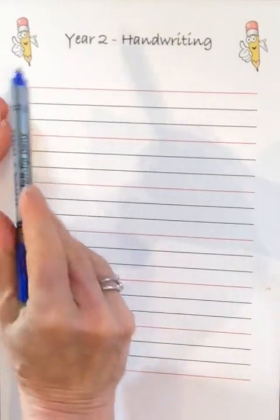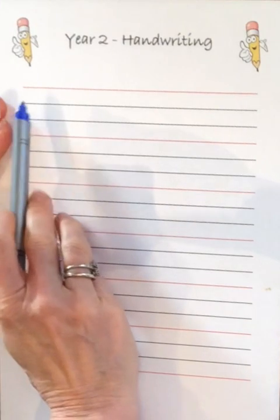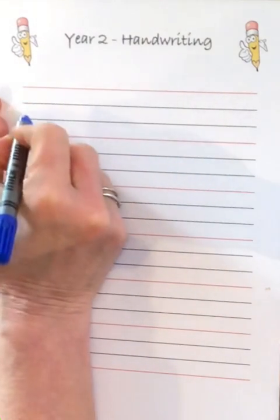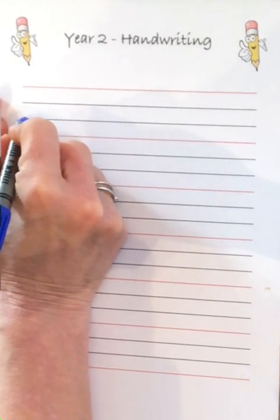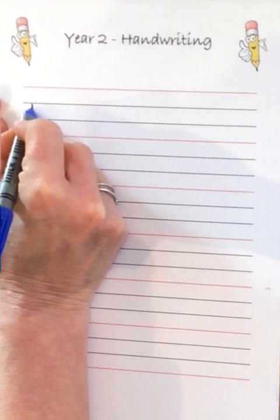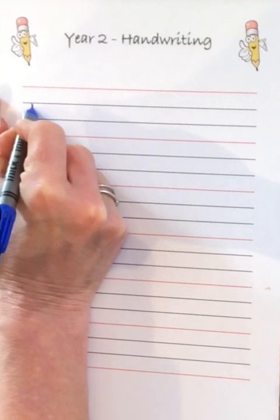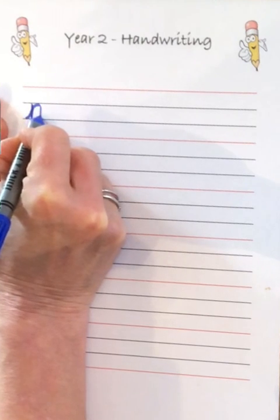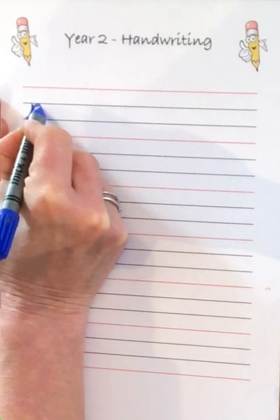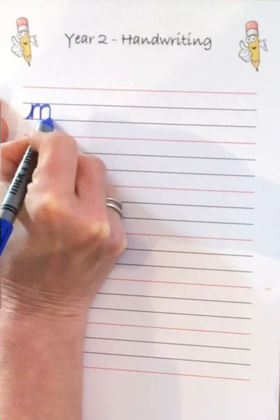So the letter M, hold your paper like I've shown you so your paper doesn't move. The letter M is going to sit in between our grey lines. It is not a tall letter and it's not a descender, it doesn't go under the line either. So start on the line, you sweep up to the grey line, back down, back up on the same line and you scoop over, then you go back over and you exit.